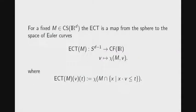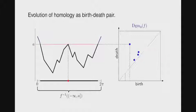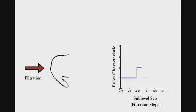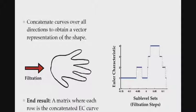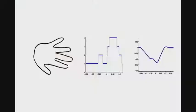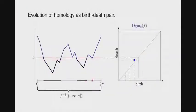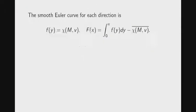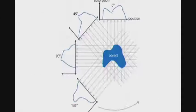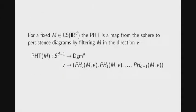Previously, we saw we had this hand, and we got this Euler characteristic curve. You could do the same thing with persistent homology. Instead of a curve, you'd get this diagram object. And you could get it from many, many directions. So you also can get this diagram.